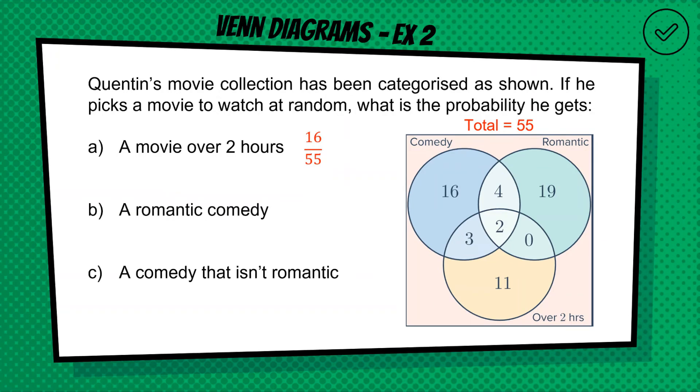For question B, what's the probability we get a romantic comedy? Well, like I said, that is the overlap of comedy and romance, which is the 4 here, but it's also the 2 there. So it's actually 6. Okay, it's not just the 4 in the, it's just not the 4 here, you've also got the 2 here. So that's all the overlap of comedy and romantic. Okay, 6 out of 55 is our probability.